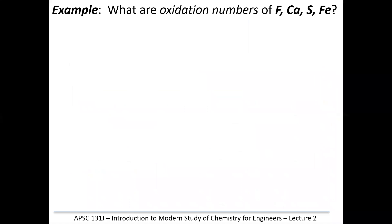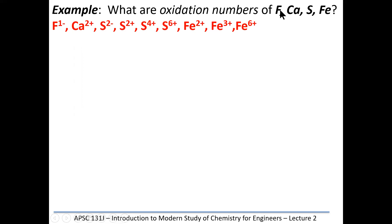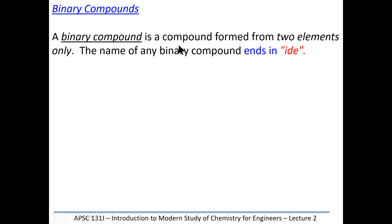Iron can be plus two, plus three, or plus six — it's also a multivalent atom. We're going to talk about mechanisms we use to distinguish between those different oxidation states. A binary compound is two elements. The name always ends in 'ide'. There are some exceptions — compounds with more than two elements that end in 'ide' — but it's a very small minority.